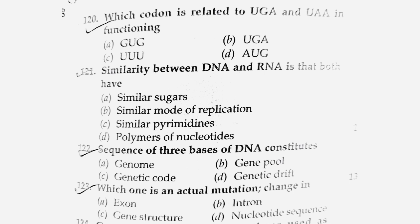Next question: The similarity between DNA and RNA is that both have — similar sugar, similar mode of replication, similar pyrimidines, or both are polymers of nucleotides? DNA and RNA are both polymers of nucleotides. Option number D is the correct answer.